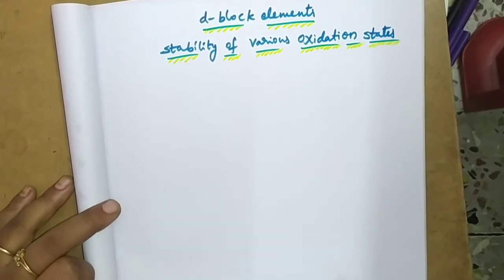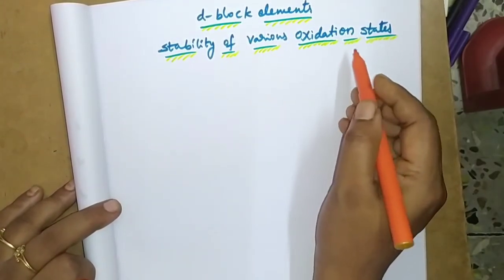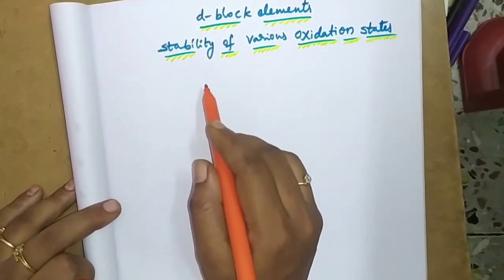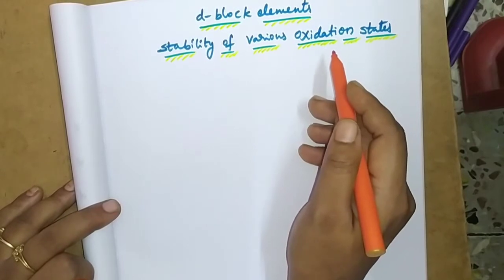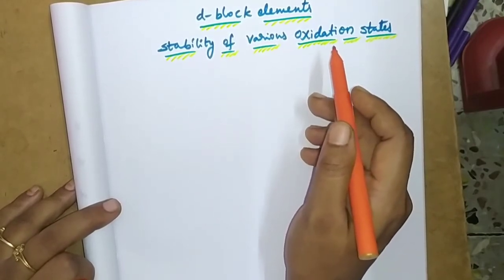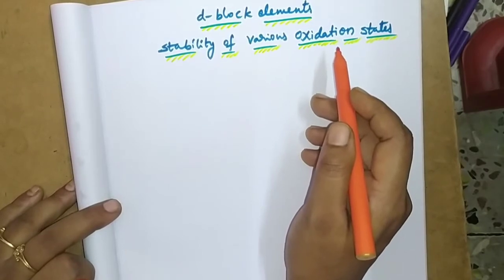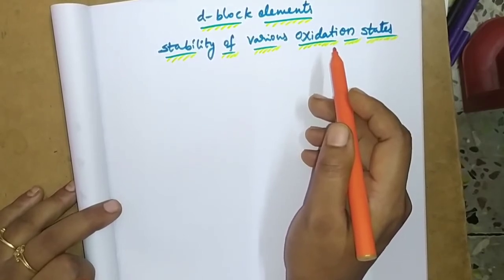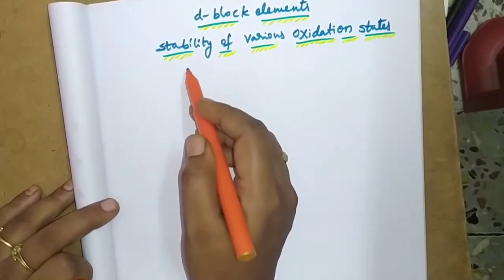Hi everyone, welcome to my channel. Today our topic is d-block elements: stability of various oxidation states. D-block elements form different variable oxidation states. In the 3d series, starting from plus one to plus seven maximum, they end at manganese. They have different oxidation states and we'll discuss how they gain stability.